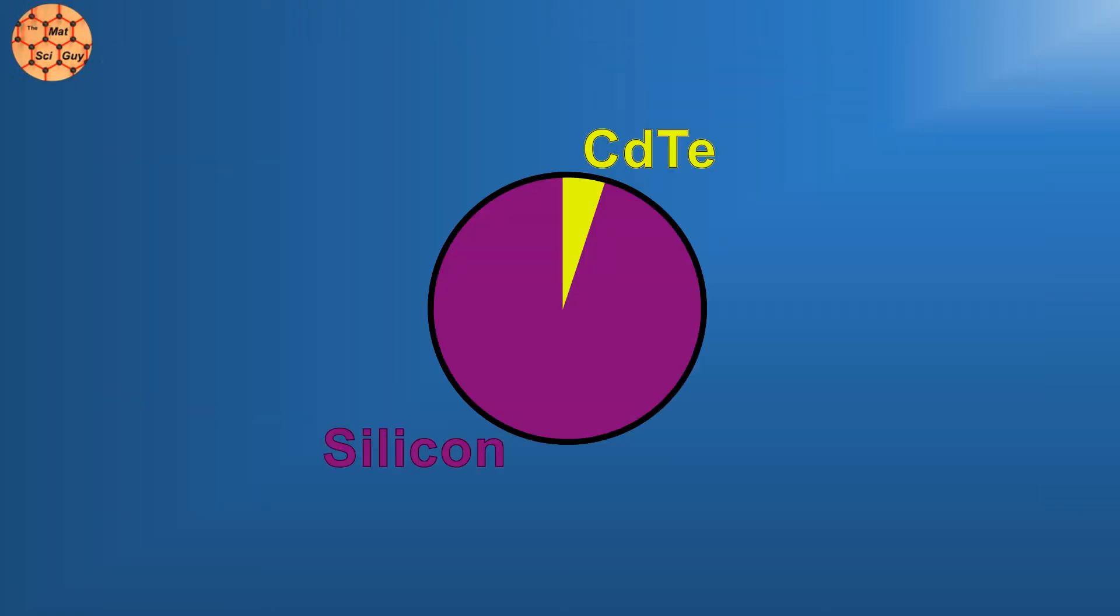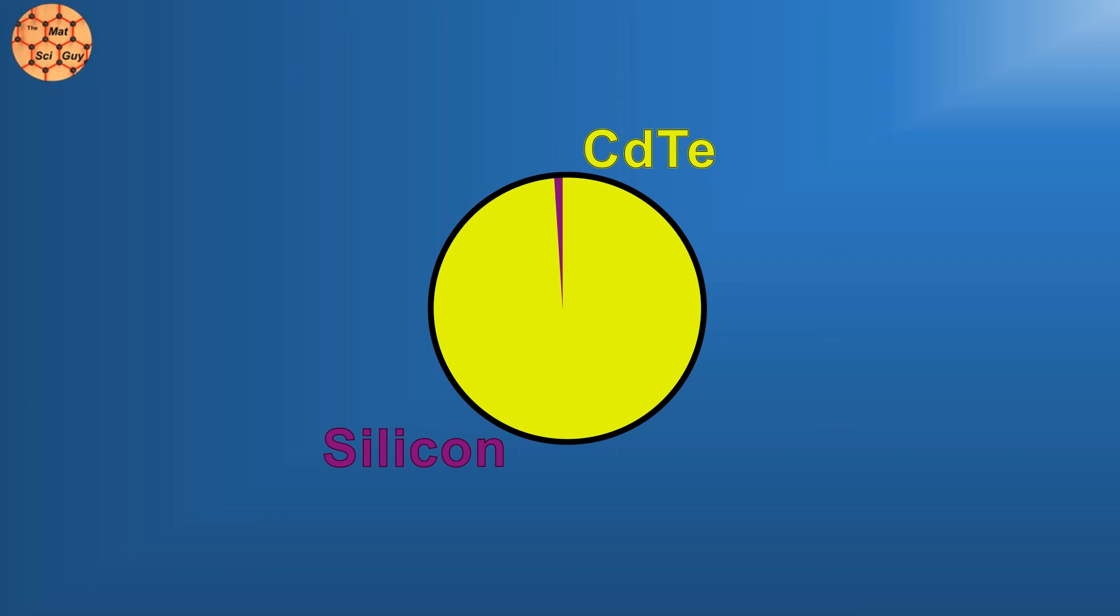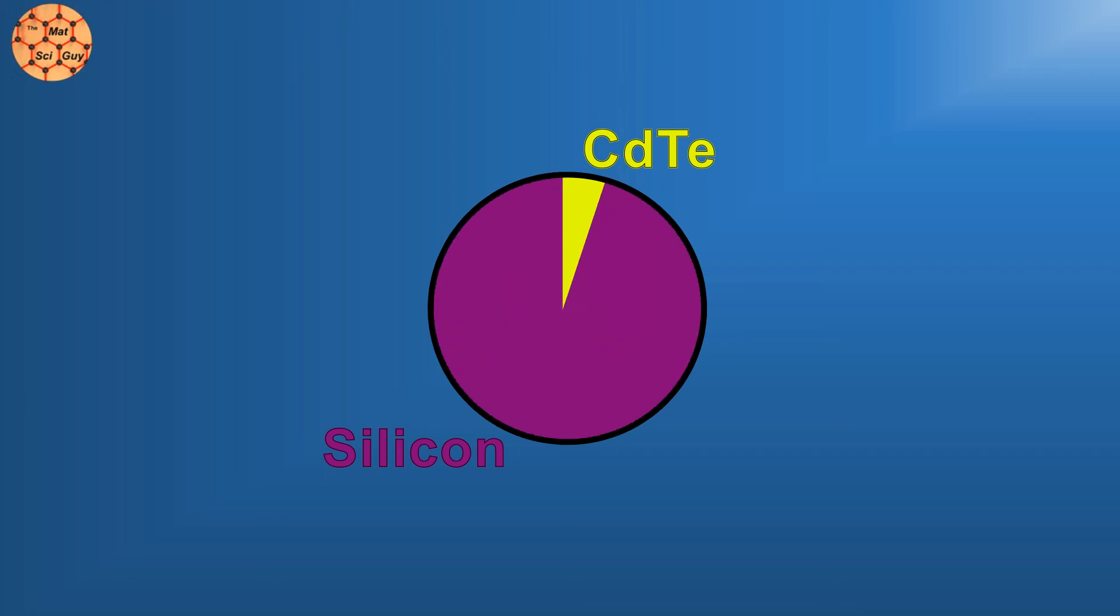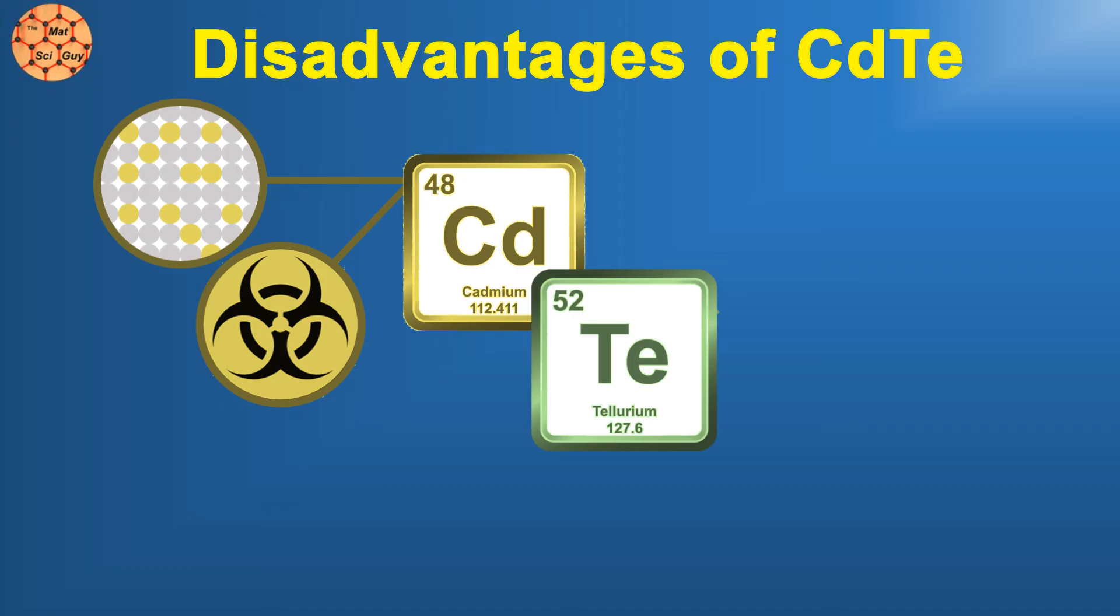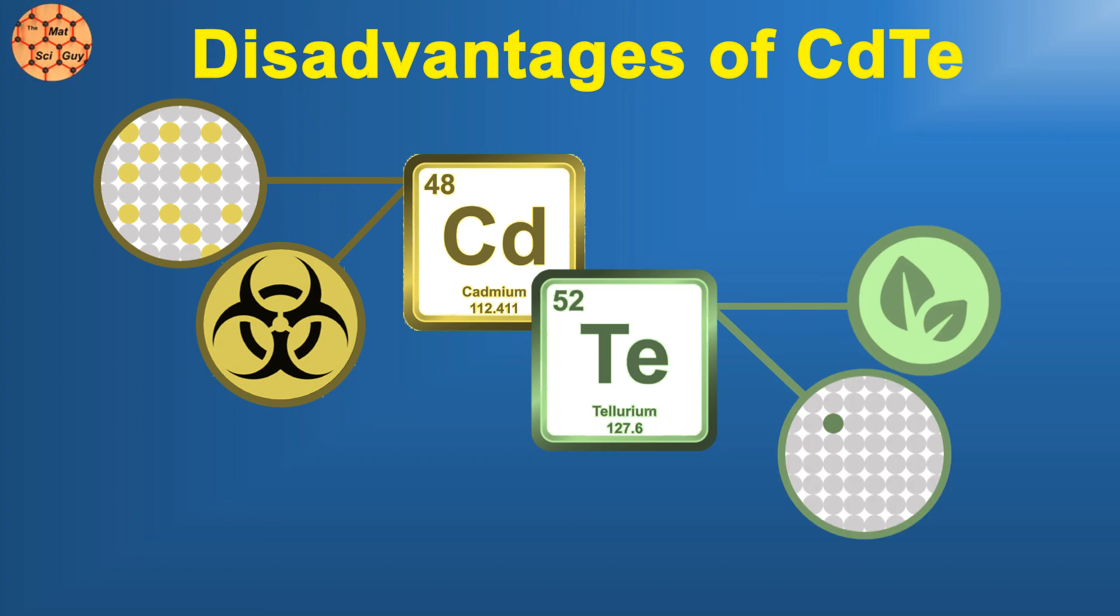So, is the future of solar cadmium telluride? Well, not necessarily. First Solar deserves a ton of credit for utilizing the technology to make solar economical, but it's not without its disadvantages. Cadmium is fairly abundant, but toxic. This doesn't pose any issue while it's in the solar panel, but it's going to make recycling of cadmium telluride panels critical once they're at the end of their life cycle. Tellurium is the exact opposite, only mildly toxic, but quite rare. Right now, that's not an issue since most tellurium is produced as a byproduct from the production of other metals, but it might be a limiting factor if the demand continues to grow.